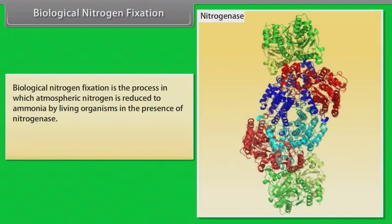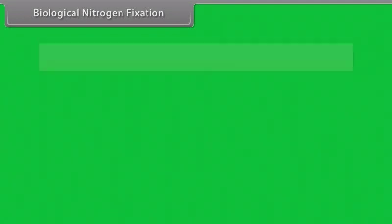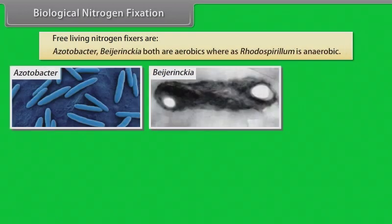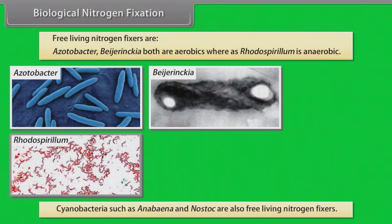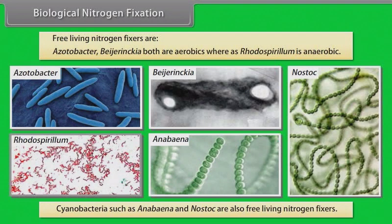Biological nitrogen fixation is the process in which atmospheric nitrogen is reduced to ammonia by living organisms in the presence of nitrogenase. The nitrogen-fixing bacteria may be free-living or symbiotic. Free-living nitrogen fixers include Acetobacter and Beijerinckia, both of which are aerobic, whereas Rhodospirillum is anaerobic. Cyanobacteria such as Anabaena and Nostoc are also free-living nitrogen fixers.